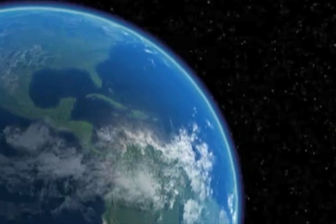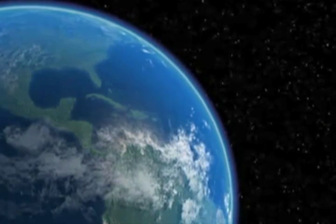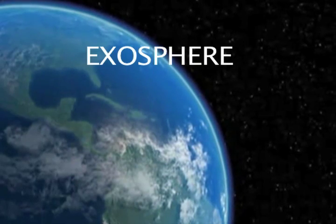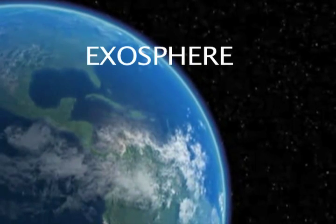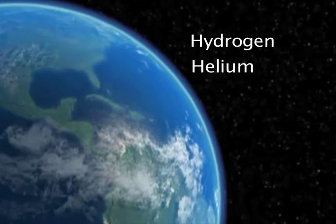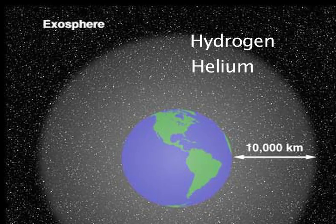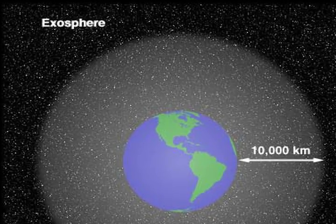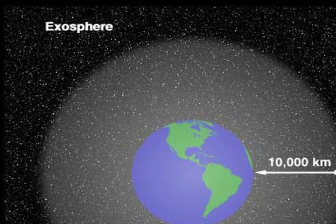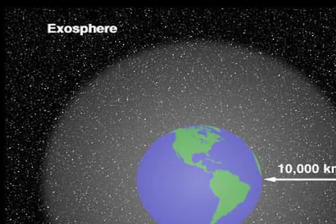The closest layer to space, where molecules and atoms shoot off into space, is the exosphere. This layer is also known as the upper limit of our atmosphere. The exosphere is very thin and is made up mainly of hydrogen and helium. Towards the top of this layer, the molecules are so far apart that there is no clear boundary between the exosphere and outer space. Some molecules escape into space while others are pulled directly back by gravity.